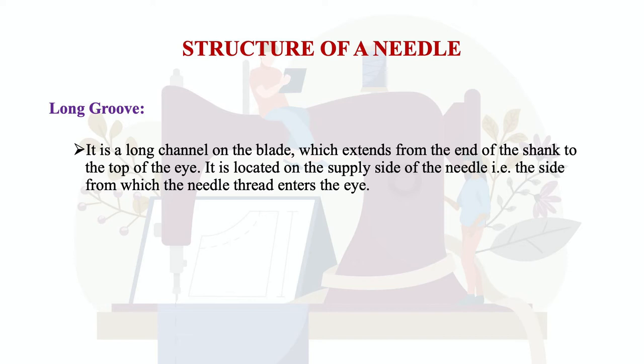The long groove is a long channel on the blade extending from the end of the shank to the top of the eye, located on the supply side of the needle — the side from which the needle thread enters the eye. This long groove part of the needle goes into the fabric and the thread enters through the eye.